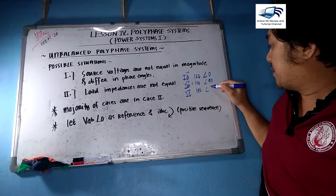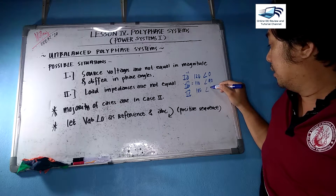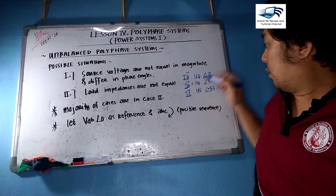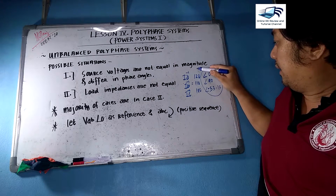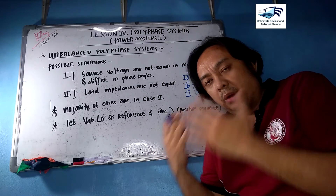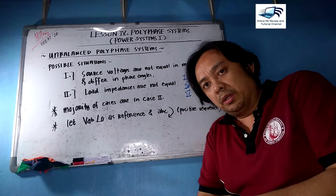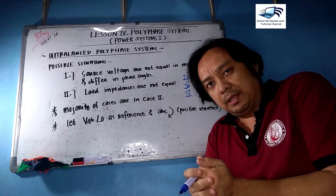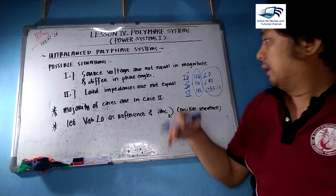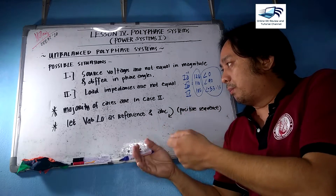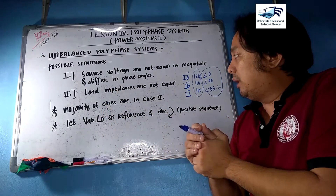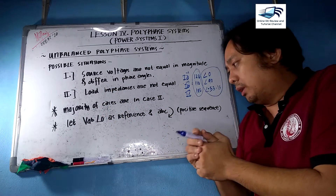Additionally, if they are not 120 degrees apart — for example, plus 90 degrees or minus 53.13 degrees — then they are not 120 degrees apart and not equal to each other. In another possible situation, which covers the majority of cases, the load impedances are not equal to each other.